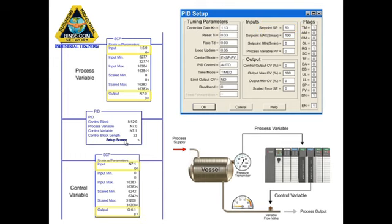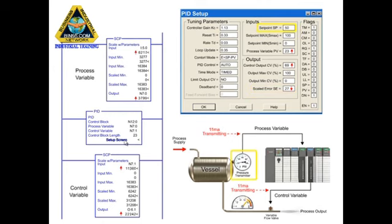As the PID instruction is executed, a scaled error is generated by subtracting the process variable from the setpoint. By increasing the control output, the error is reduced to attain the setpoint as the PSI is raised in the system. In other words, the valve position is gradually closed to reduce the pressure loss. Upon reaching the setpoint in the system, the control output and scaled error is reduced to zero.